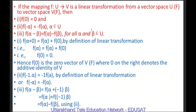If the mapping F from U to V is a linear transformation, then F(0) = 0, F(−α) = −F(α), and F(α − β) = F(α) − F(β) for all α, β belonging to U. To prove F(0) = 0: since F(α + 0) = F(α) + F(0) by linearity, and F(α + 0) = F(α), we get F(α) = F(α) + F(0). By the property of vector spaces, F(0) = 0, the zero vector of V.